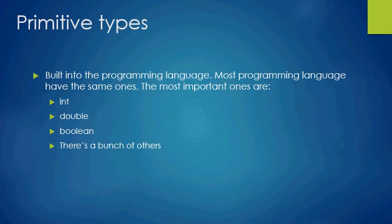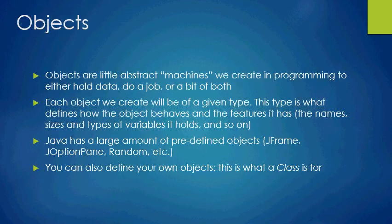Objects, like I was saying before, are like little abstract machines that we create in programming to either hold data, do a job, or a bit of both. Each object we create will be of a given type, and this type defines how the object behaves — the names, size, and types of variables it holds, and the operations it knows how to do, called methods. Java has a large number of predefined objects like JFrame, JOptionPane, and Random — those are really classes, not objects, but let's keep it simple for now.